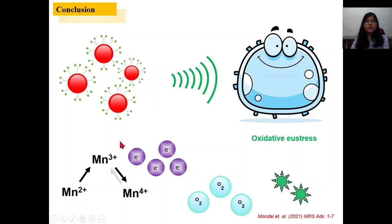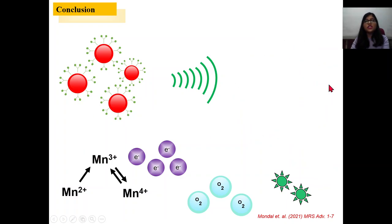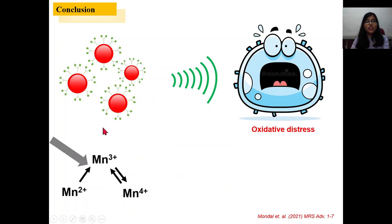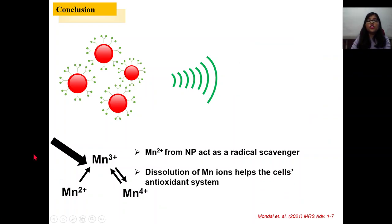But if the cell stays at the oxidative distress condition, then in addition to this mechanism it will also employ two other mechanisms: Mn from the nanoparticle will act as a radical scavenger, and the dissolution of Mn ions helps the cells' antioxidant system because most of the antioxidant enzymes have Mn as their cofactor.